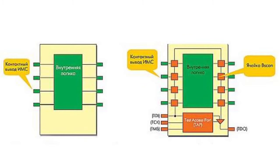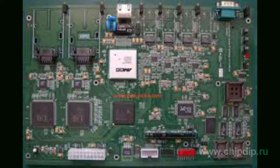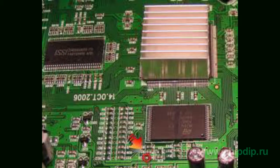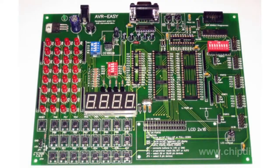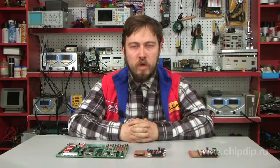If a device has one or more chips that support IEEE 1149.1 standards, you can test not only the circuit associated with these chips but also other elements including memory, logic, resistors, and external connectors. When boundary scan mode is applied, JTAG components disable their logic and go to test mode, allowing external hardware to manage its findings and test the circuit.